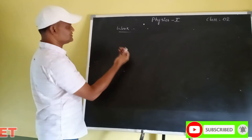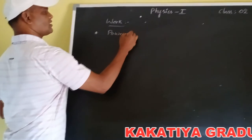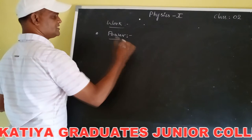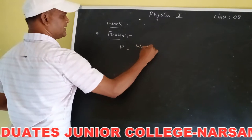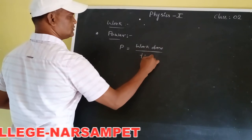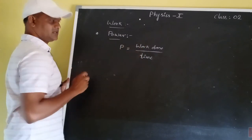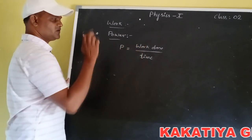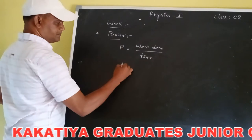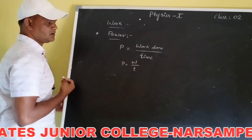Now, the combination of work and time gives us power. Power is denoted by P. P is nothing but work done divided by time — it is defined as the rate of doing work. The rate of doing work is known as power, and it is represented as P equals W by t.